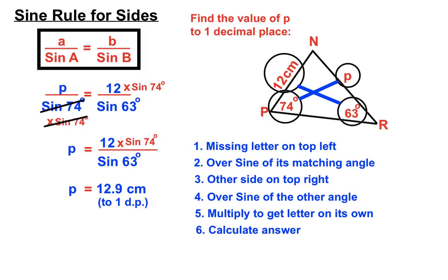It's always good to have a bit of an idea of what answer you're expecting. Because opposite sides are closely related to their opposite angles, the side of 12cm was produced by an angle of 63 degrees. So we'd expect a side from an angle of 74 degrees to be a little bit larger than 12cm — and we got 12.9 centimetres. That's always useful for picking up silly errors.